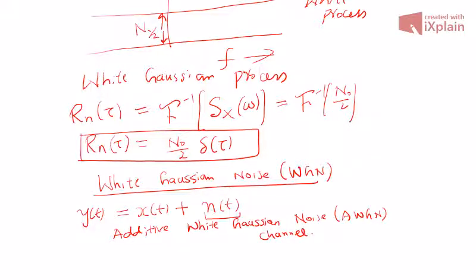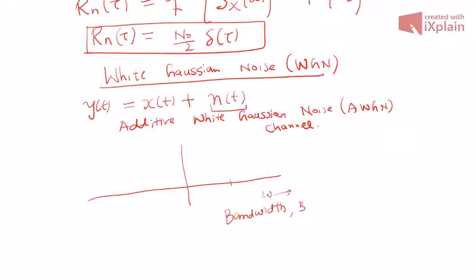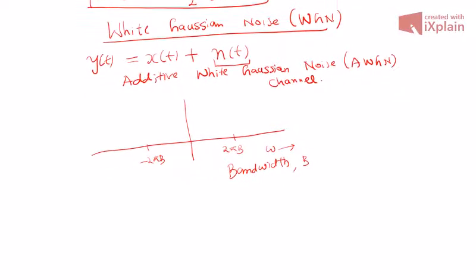There are many details associated with this, but as mentioned, we will defer that till our digital communication course. For our subsequent discussions, this much knowledge is sufficient. Now, if you consider a band-pass system that has a bandwidth B hertz, on the angular frequency scale this corresponds to 2πB and −2πB. It is as if you have passed this noise through a band-pass filter.